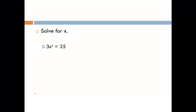In this first example, we want to solve the equation 3 times e to the x power is equal to 25. The property we'll use is that the log of any base a of a to the x power is equal to x. This means that if you take the log where the base of the logarithm is the same as the base of your exponent, everything cancels out and you're just left with the exponent.